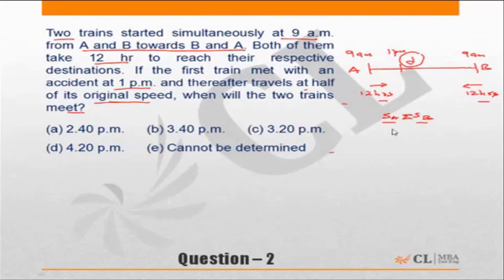Now I'm going for the speed. Let the speeds of the trains be 2 km per hour. Why 2 km per hour? Because the first train, after the accident, travels at half the original speed, so it will travel at 1 km per hour. This reduces my calculation effort to ensure there are no decimals.